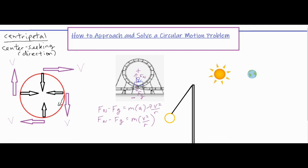Depending on what the question is asking, you fill in the known variables and work out the algebra. Another formula you might use is v = 2πr/T, which is basically a distance over time formula. 2πr — two times pi times the radius — is the circumference of the circle. T stands for period, which is the time it takes to complete one full cycle. Depending on what you're given, you may need to solve for velocity first and then plug it into the equation.